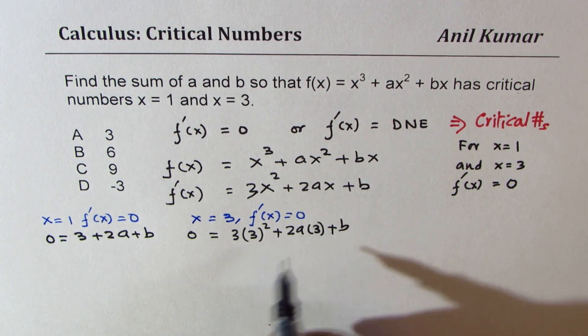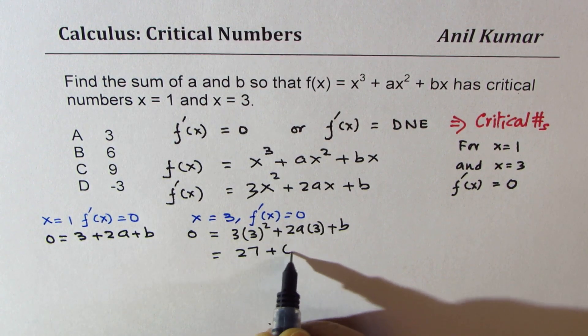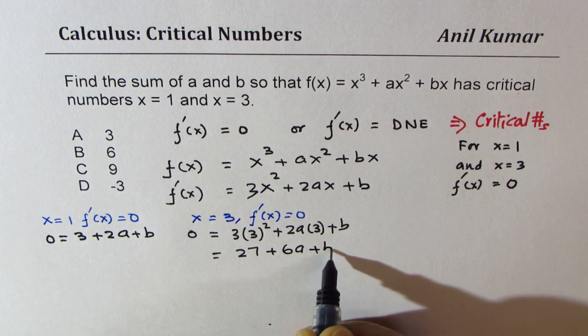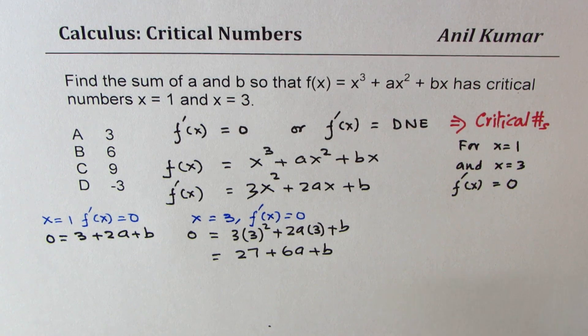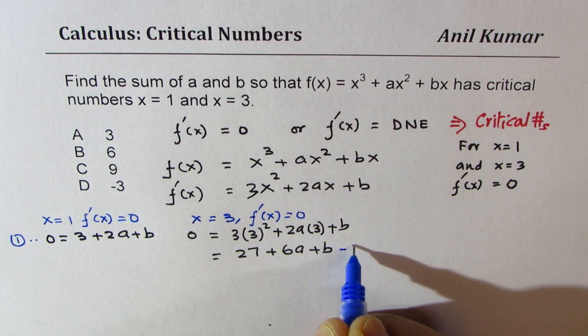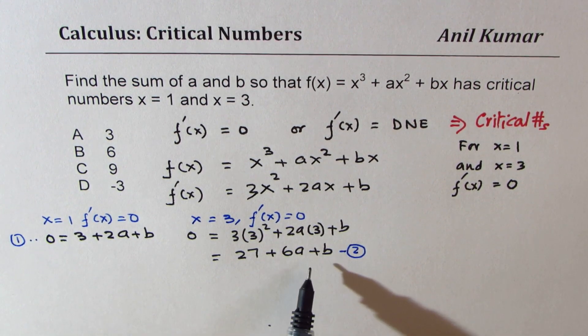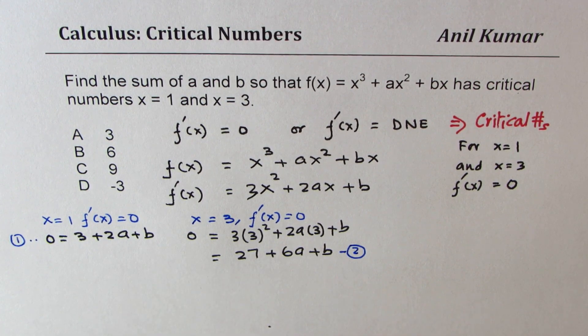So we have equation number 1 here and equation number 2. Now to find the values of a and b, what we can do is we can just solve. Let's do equation 1 take away equation 2.